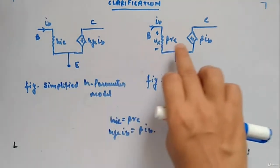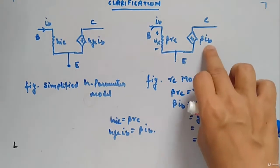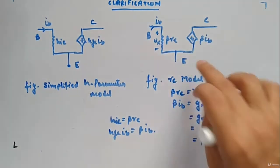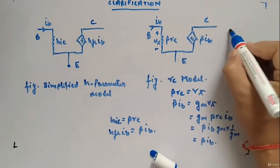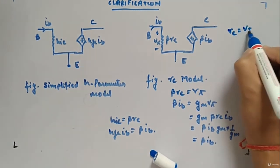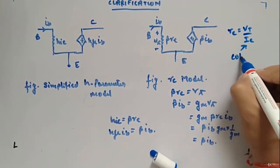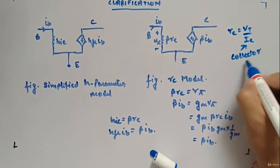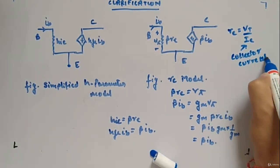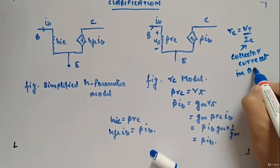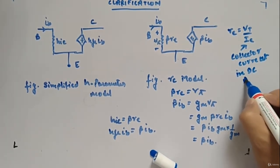Here in re model you have beta re, beta ib, ib, emitter. Here re is vt by ic. Ic is the collector current in dc analysis.